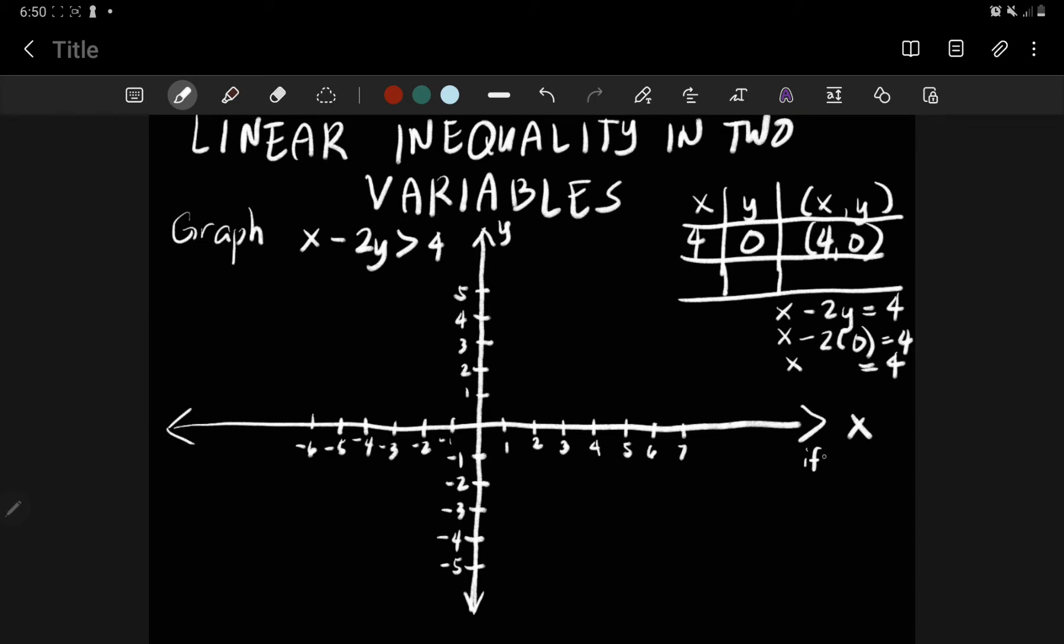And then next is if your x is zero for the y intercept. So substitute your x with zero, zero minus 2y equals 4. So your meaning is negative 2y. So then you divide with negative 2. So negative 2y divided by negative 2, that's y. 4 divided by negative 2, that's negative 2. So you have your 0, negative 2.